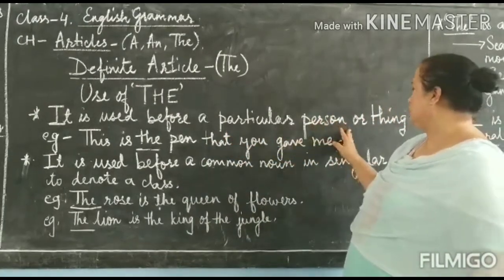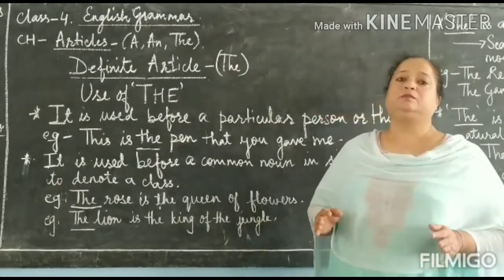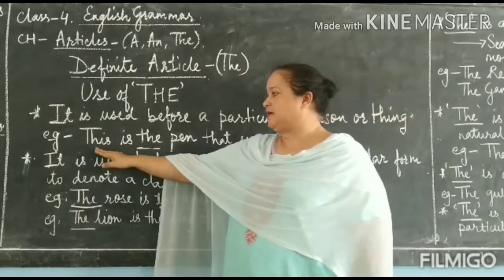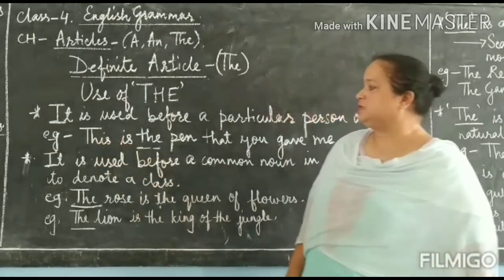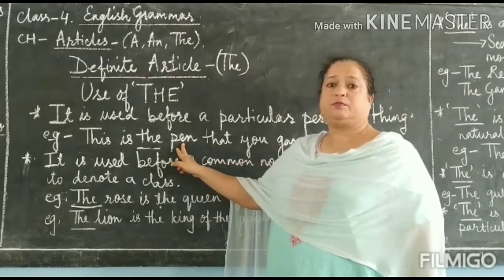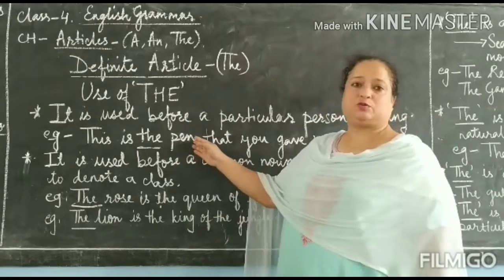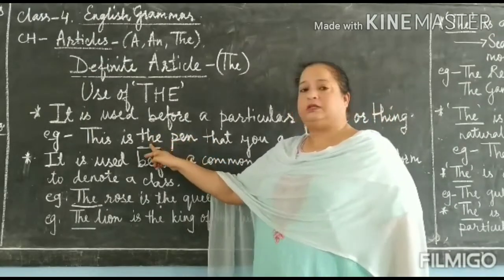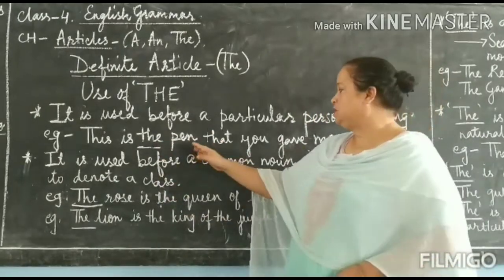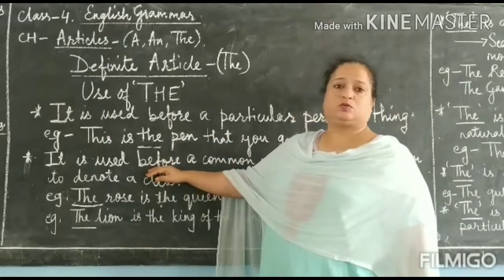The first use is: 'the' is used before a particular person or thing. By this I mean that when we talk about something in particular, we use the article 'the'. For example: 'This is the pen that you gave me.' In this sentence we are talking about a specific pen — which pen? The particular pen that I gave you. So we are talking about one single pen, which is why we use 'the'.